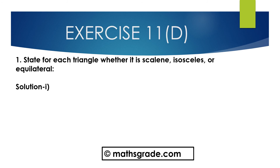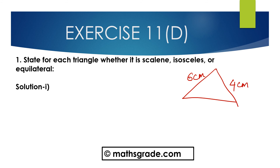Now we will solve Question No. 1: State for each triangle whether it is scalene, isosceles, or equilateral. First, draw the given figure. This triangle is given with sides 6 cm, 4 cm, and 3 cm. In this triangle, all three sides are different — 3, 4, and 6 are not equal. So this is a scalene triangle. We know a triangle whose all three sides are different is said to be a scalene triangle.